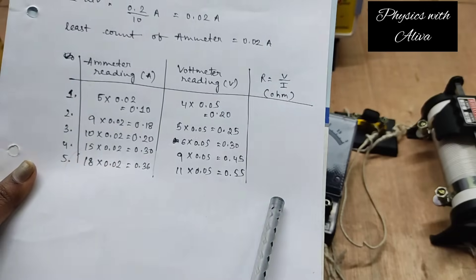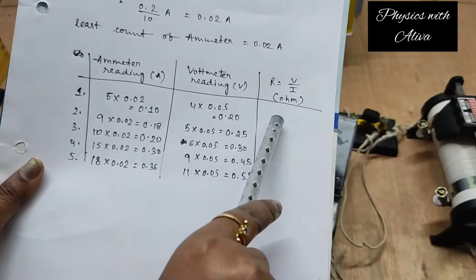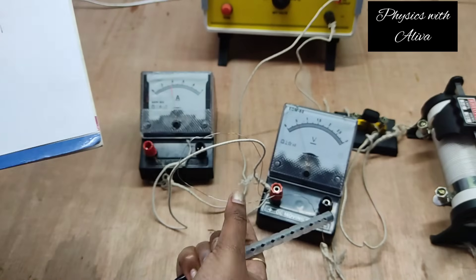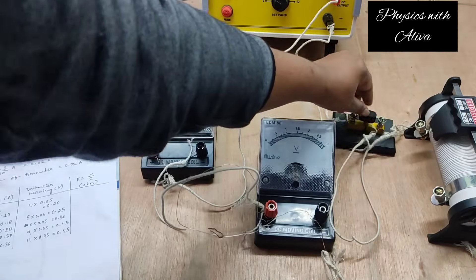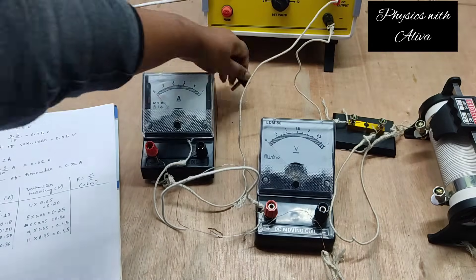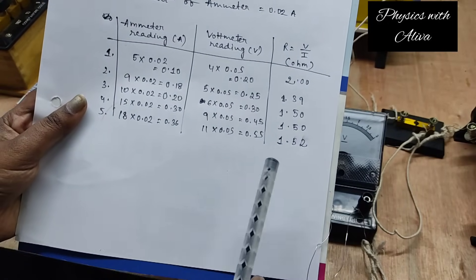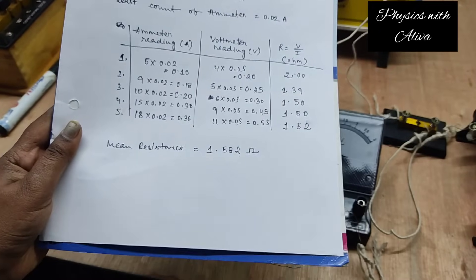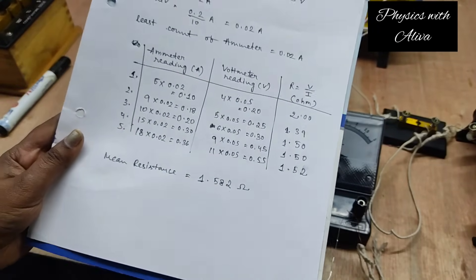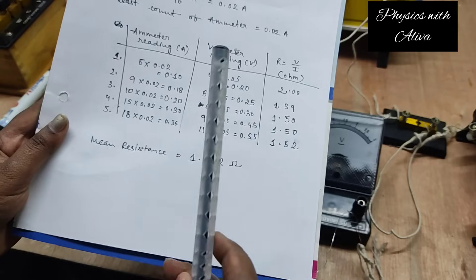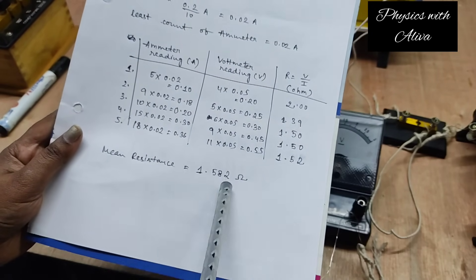Now we have to calculate the resistance from each reading. We will divide the voltage by current and we will get the resistance of this resistance wire. We have already taken all readings, so I am disconnecting the key. Now we have calculated the resistance and we have to take the average of these values. This is the mean resistance of the resistance wire obtained by calculation. Now we have to plot the graph of potential difference versus current, and from there we have to calculate the resistance.